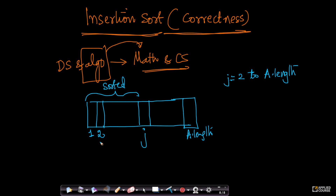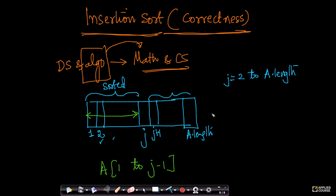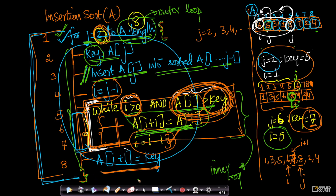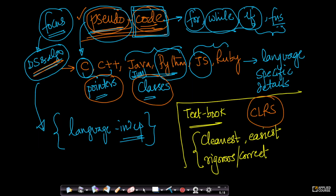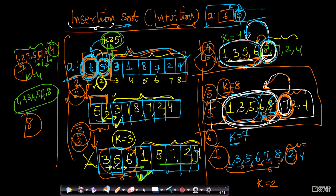At any point when j takes one of these values, this sub-array from A[1] to A[j-1] is already sorted. From j+1 onward, I haven't seen it yet so I can't say anything about it. What I am doing is taking the jth element and reorganizing the elements from 1 to j — inserting it into the right place and shifting everything else to the right. This line in the code is doing that shifting.